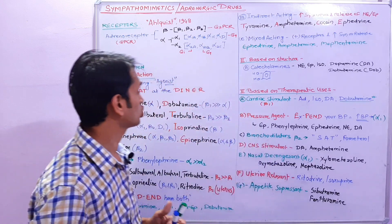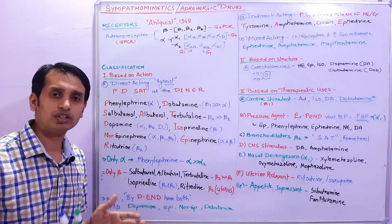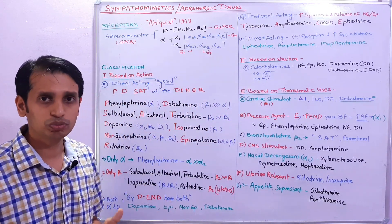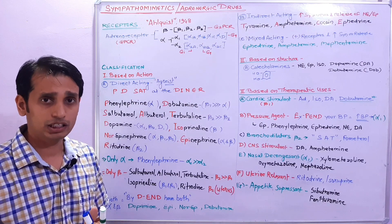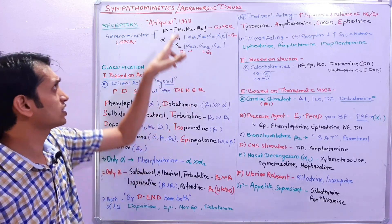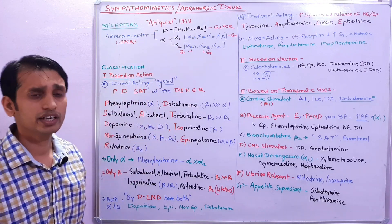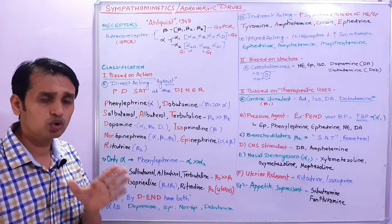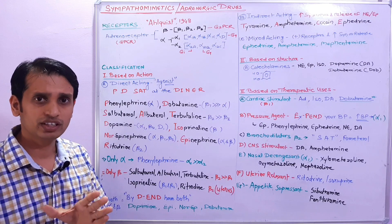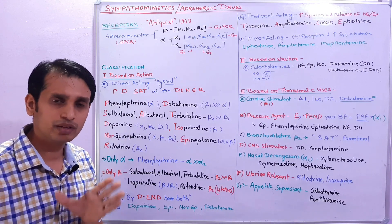Before we start the topic, we should know about the adrenoreceptors. Adrenergic receptors are classified by the scientist Alquist in 1948, and they are classified into two categories: first is alpha and second is beta.